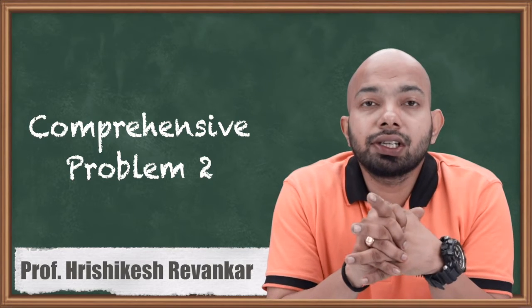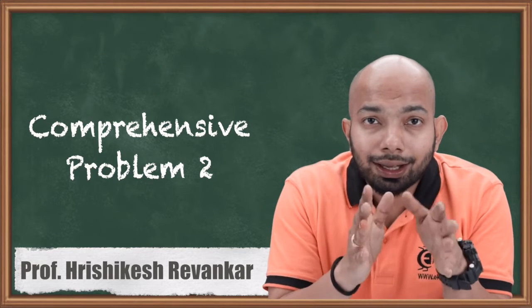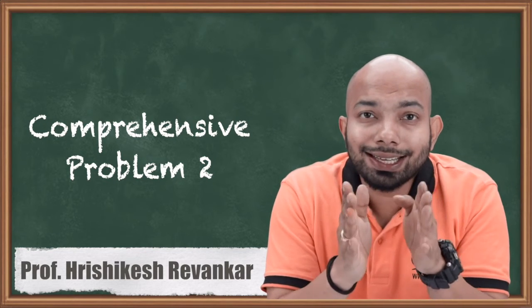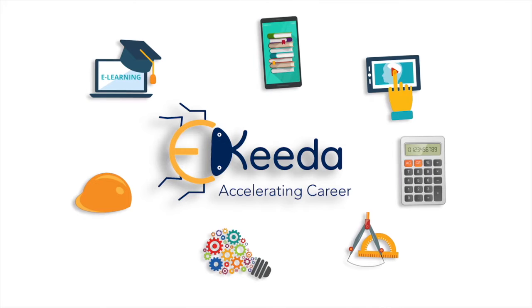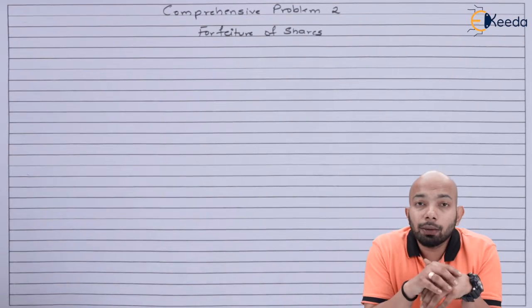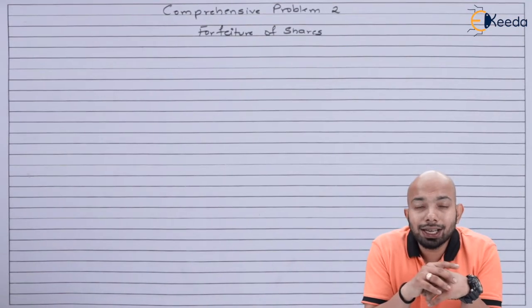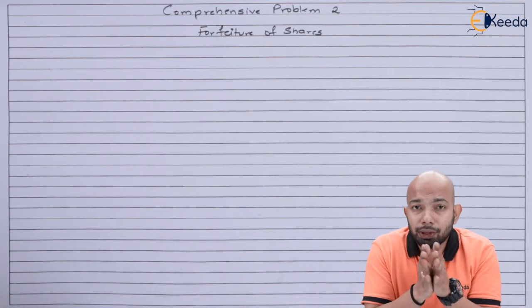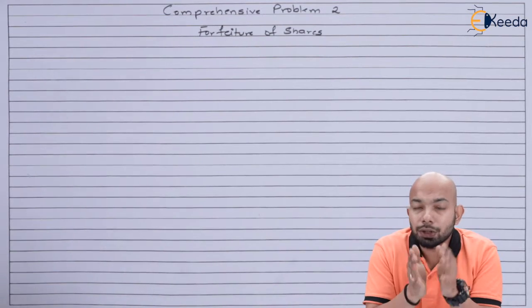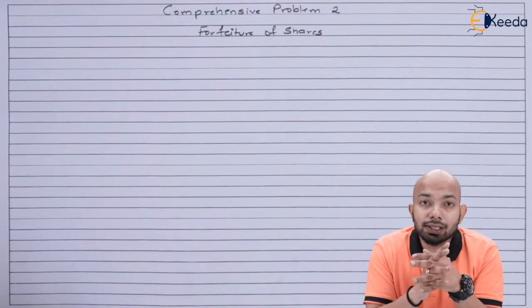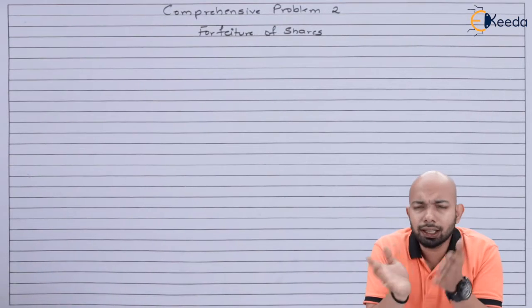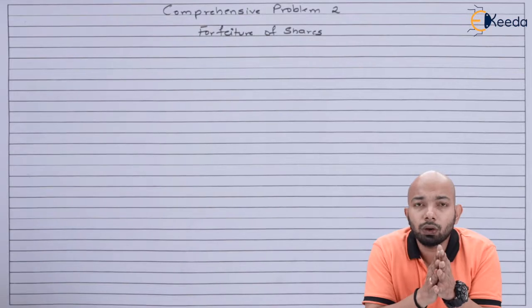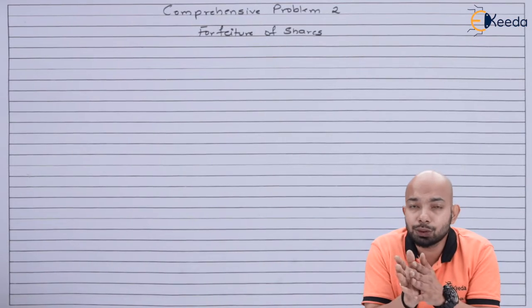We will be discussing an illustration related to the share forfeiture topic. Rather than just one problem, we'll be discussing three problems in one solution. There are three different situations, and we'll be solving all of them together in this illustration. Let us first note down all three situations, and then we can go ahead with solving each case.